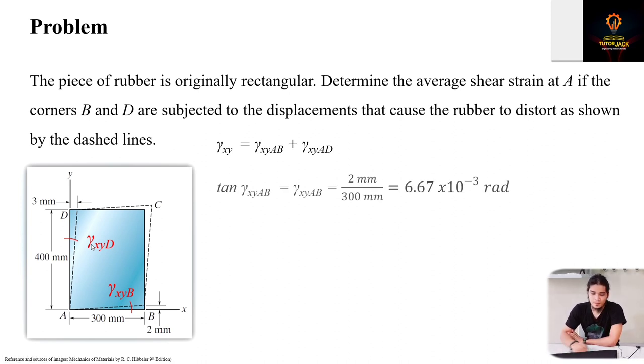First, let's solve for AB. For AB, you have tangent, which is opposite over adjacent. The opposite distance is 2 mm and the adjacent is 300 mm. So tangent gamma AB is just equal to gamma AB. For smaller angles, tangent theta equals theta. So 2 mm divided by 300 mm equals 6.67 times 10 to the negative 3 radians.